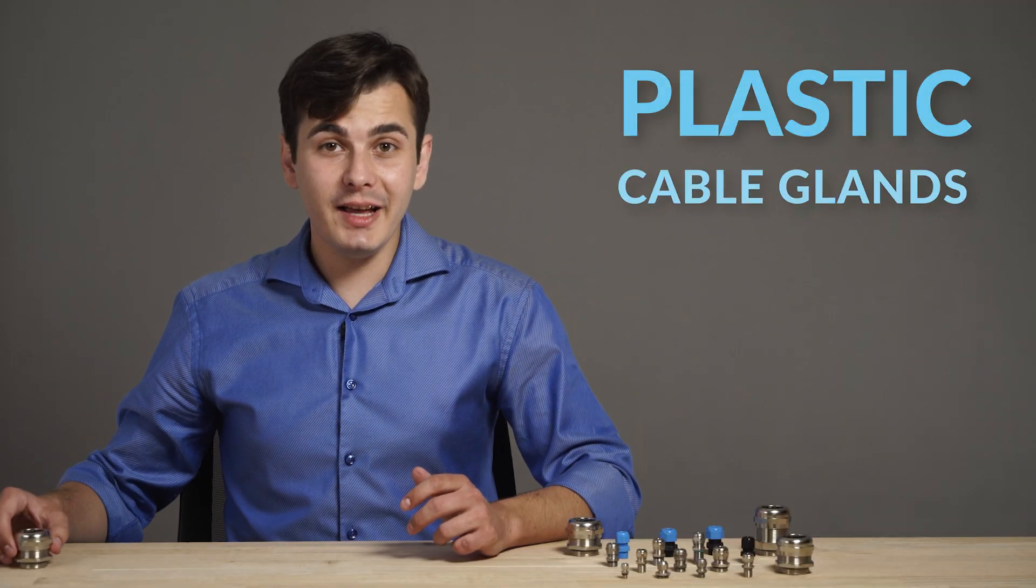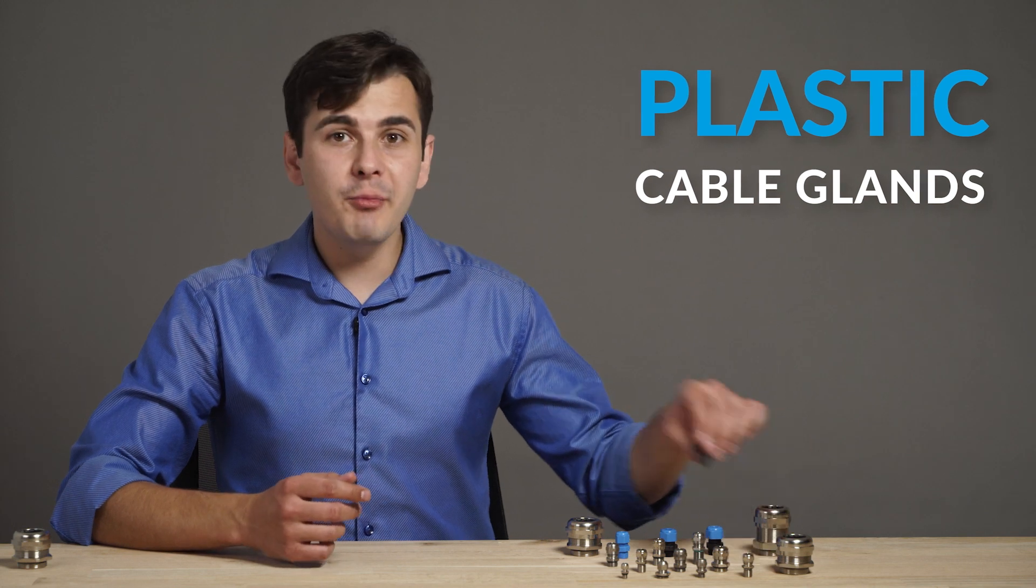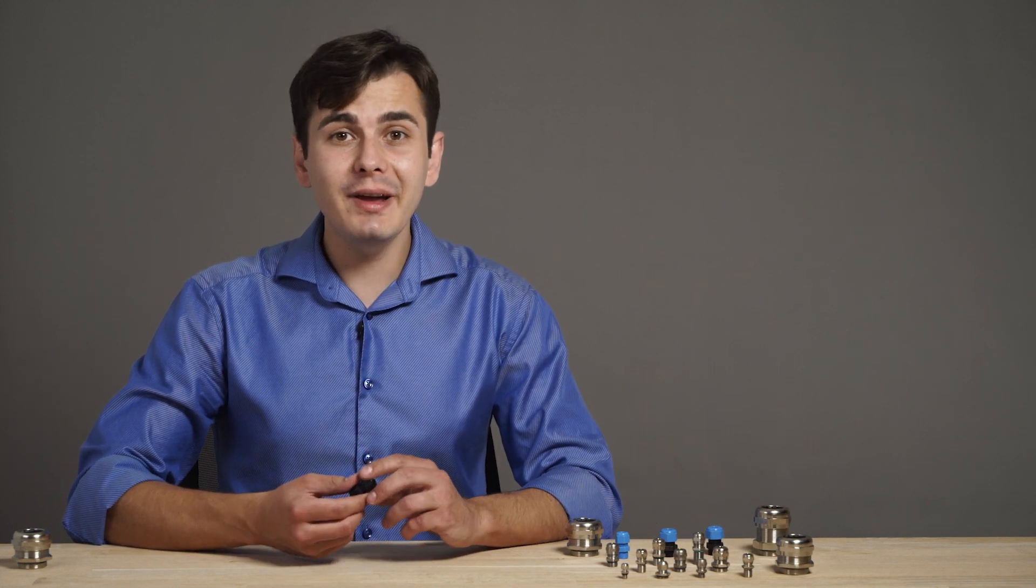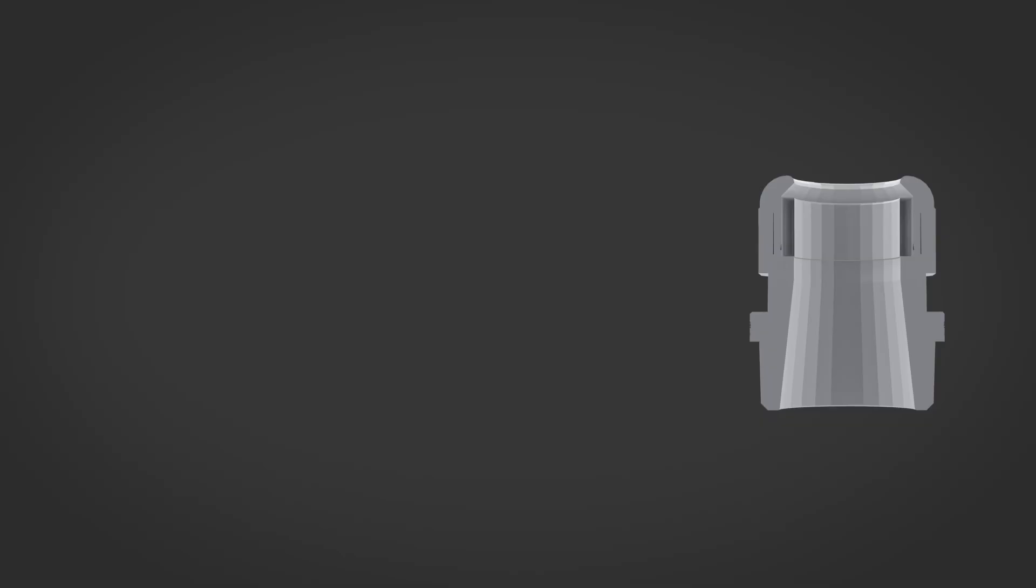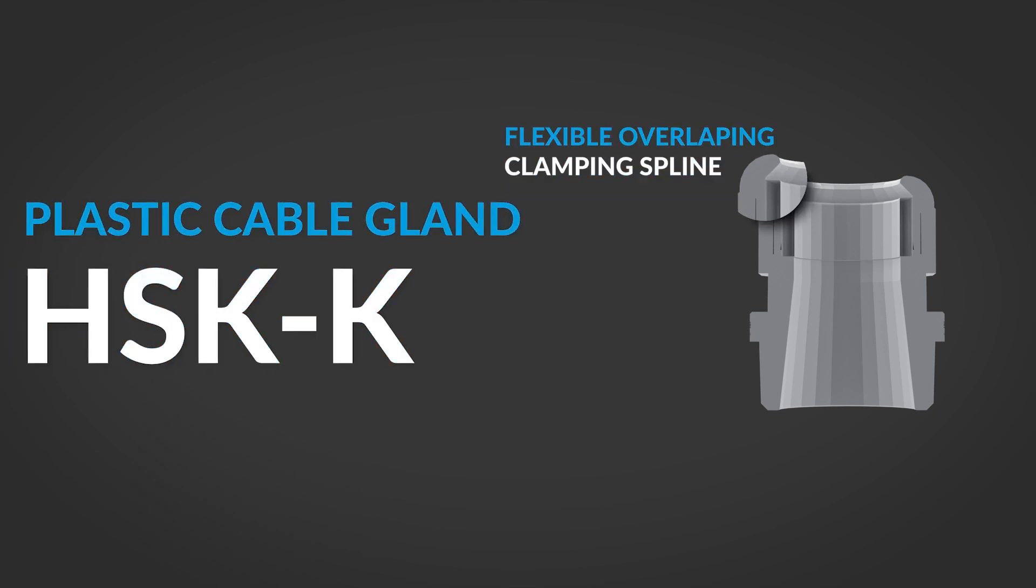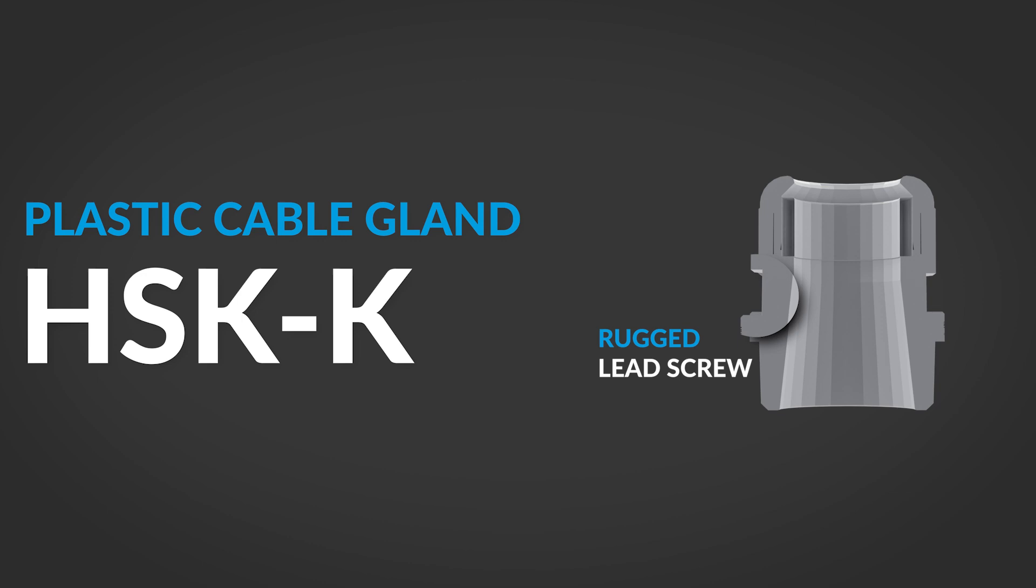The plastic cable glands of the HSKK series meet the highest demand on quality and are made of polyamide or PVDF. It is equipped with flexible overlapping clamping spline, ragged lid screw, a concentric seal ridge and a molded groove.